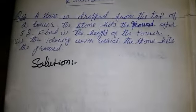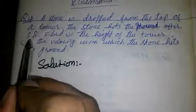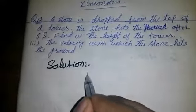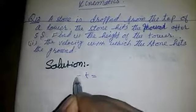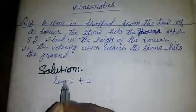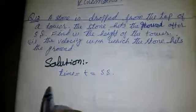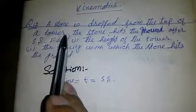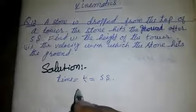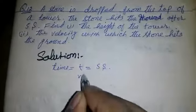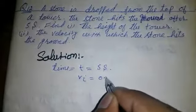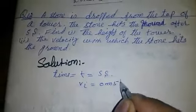Its data is given, which is time t equals 5 seconds. When it drops from the top of the tower, so its initial velocity vi is equal to 0 meters per second.